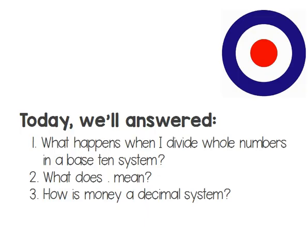So, today we have answered what happens when I divide whole numbers in a base 10 system. I get decimals. I get tenths. I get hundredths. I get thousandths. And so on. Until they're tiny, tiny, tiny. What's that period thing mean? It's a decimal point. It separates my whole numbers from my decimal numbers. How is money a decimal system? Well, in the United States, we have single $1 bills that we divide into tenths with dimes and into hundredths with pennies. And then we combine them in all kinds of different ways. Thank you for playing along. This one's been a little long. Tomorrow, we will take a look at what's in your notebook. And keep moving.